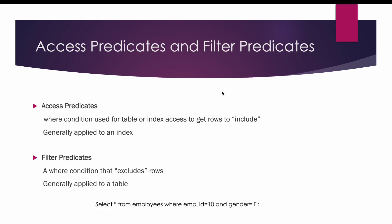Now let us talk about access predicates and filter predicates. Access predicates are the columns used in the WHERE clause to include rows. Whenever you execute a query, you first have to access or touch the table, usually using an index. The access predicate ensures that we only access the interested rows. Access predicates are generally applied on an index.